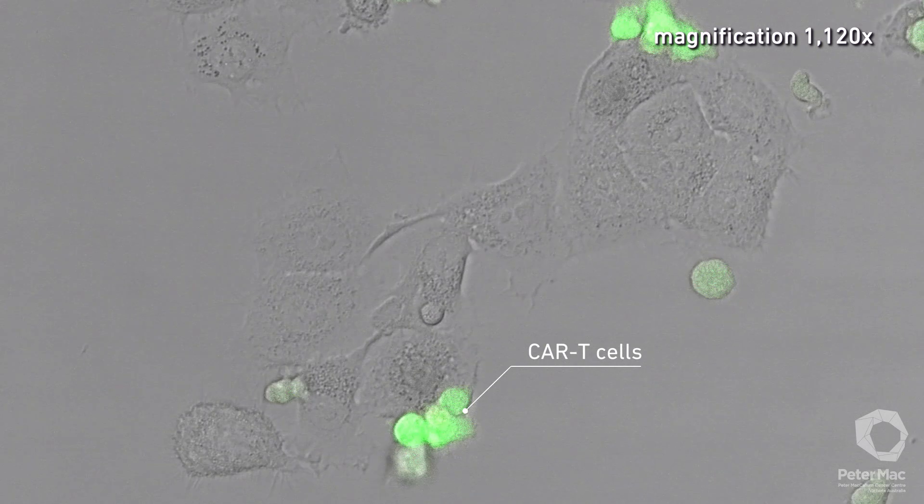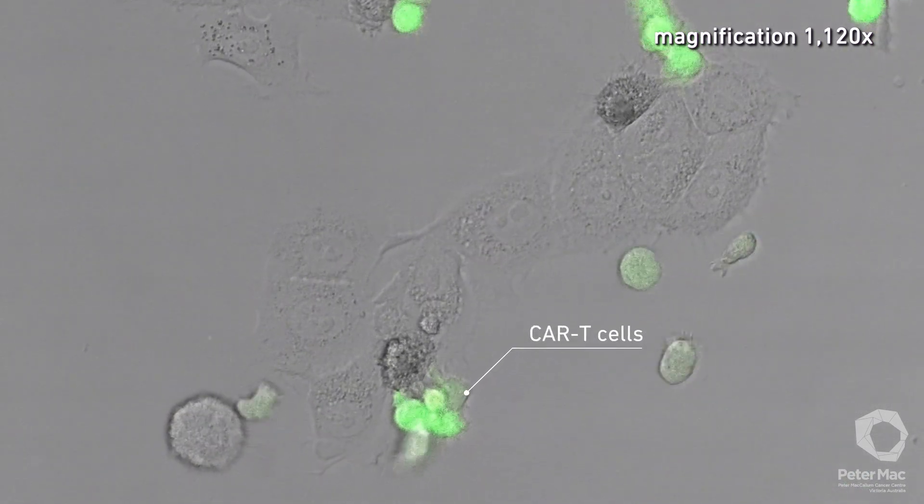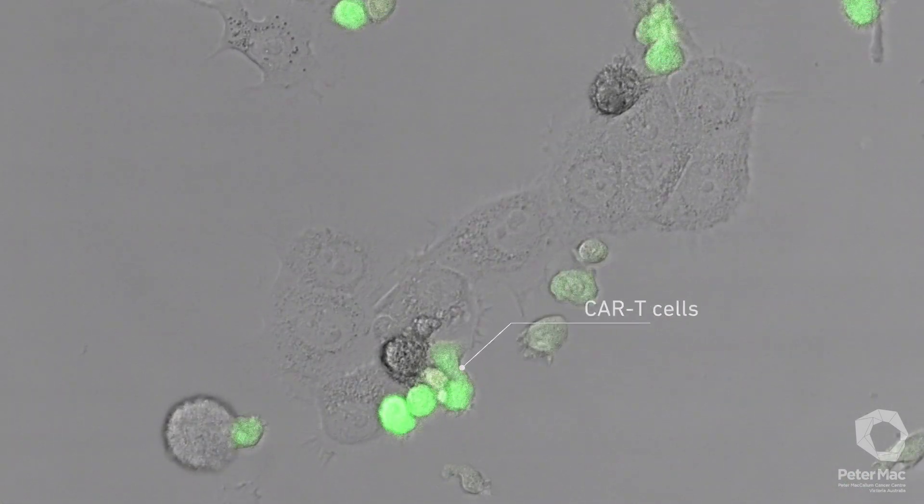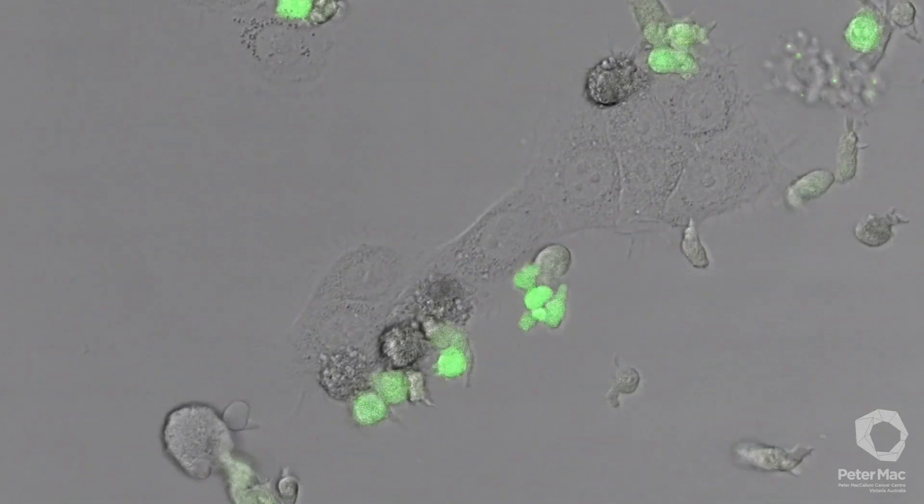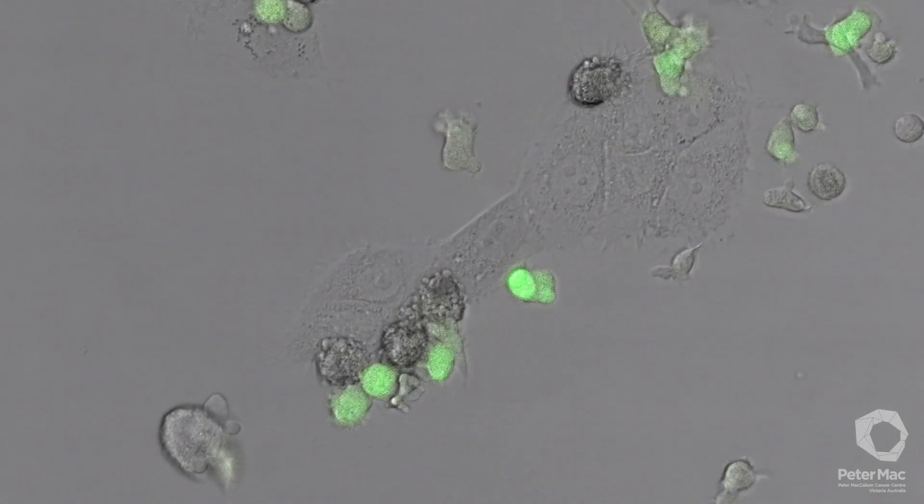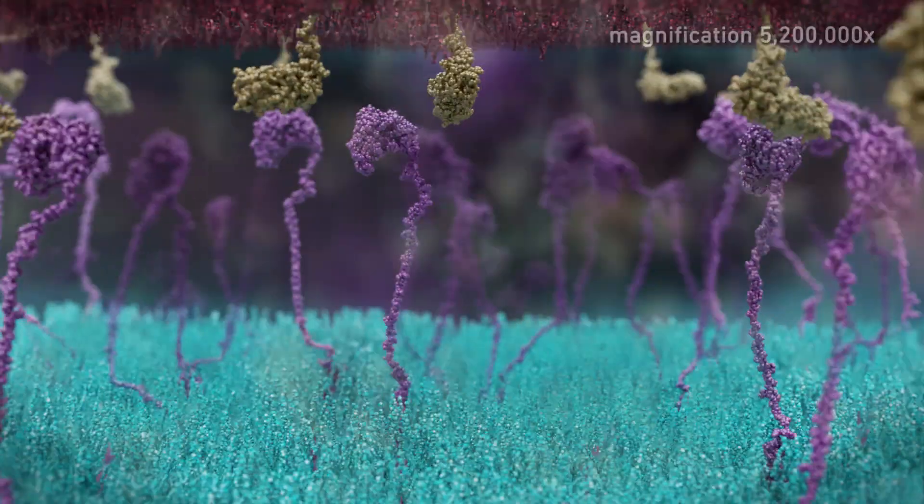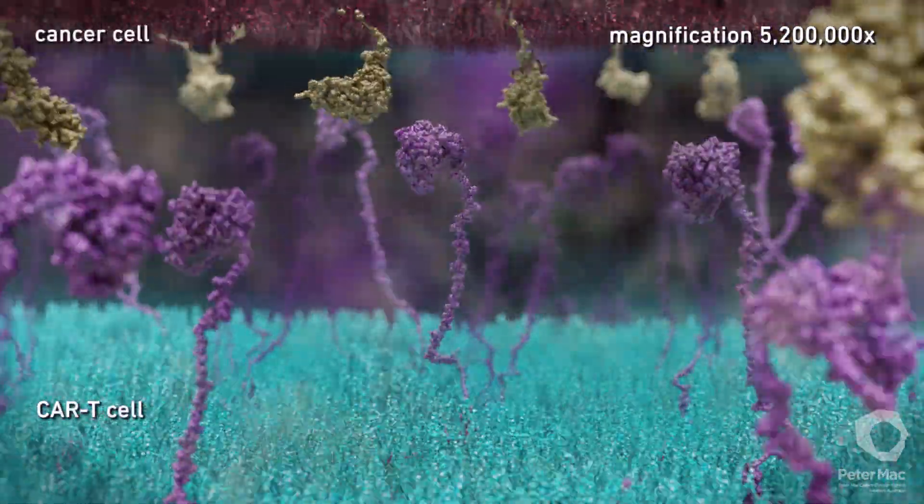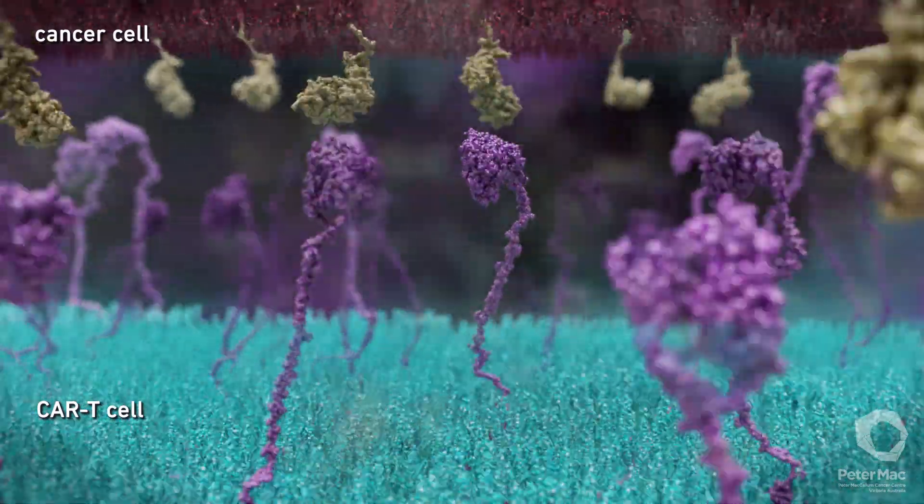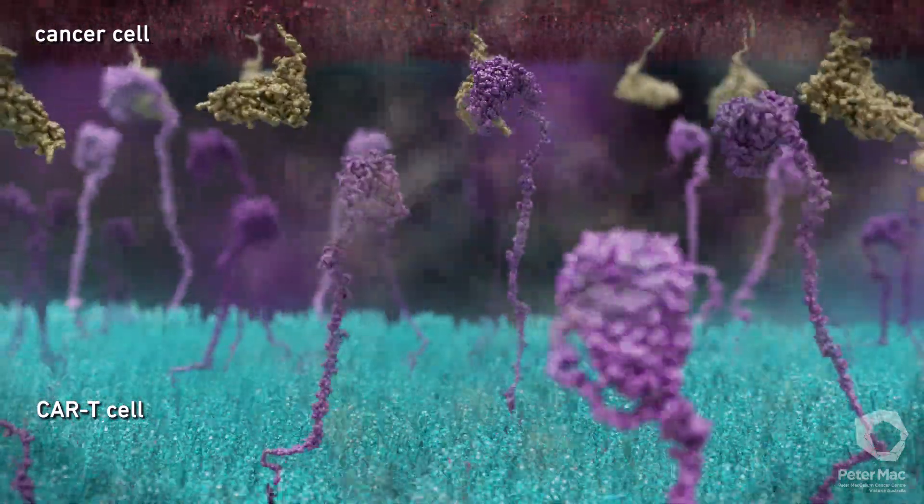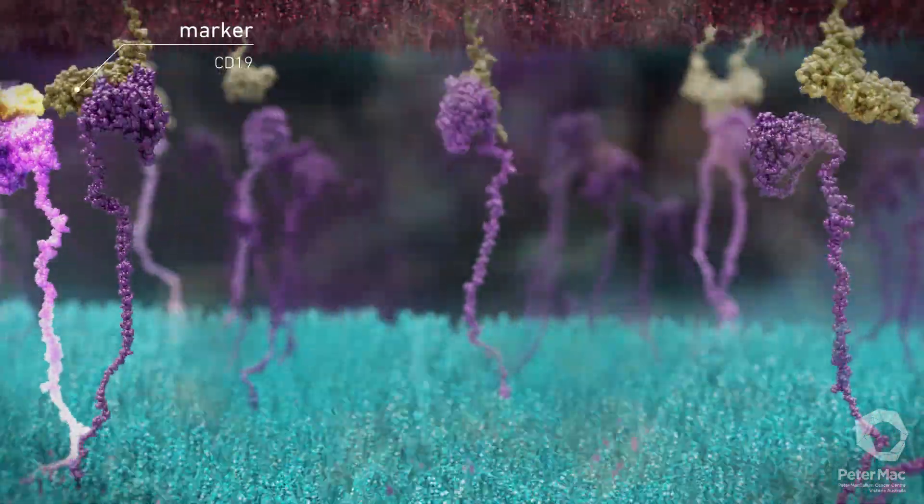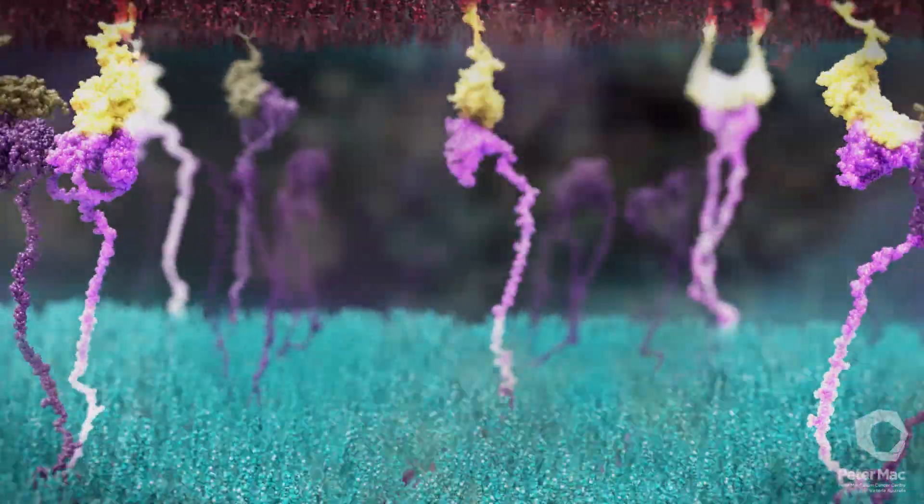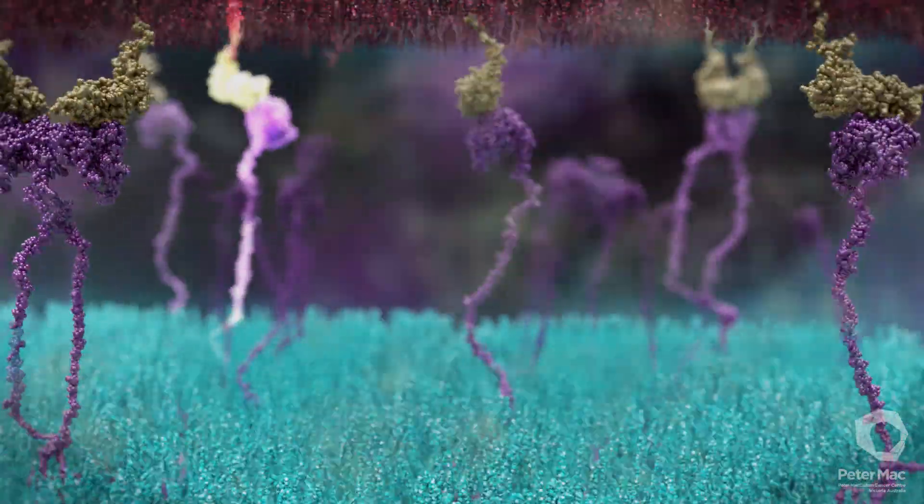We can see some green CAR T cells through a microscope. Once they are in the body, the special receptors enable the CAR T cells to seek out and recognize the patient's cancer cells. We are now looking at the magnified surface of a CAR T cell in contact with a cancer cell. The CARs can directly bind to specific markers on the patient's cancer cells, shown in yellow, overcoming the need for MHC1 to be present.